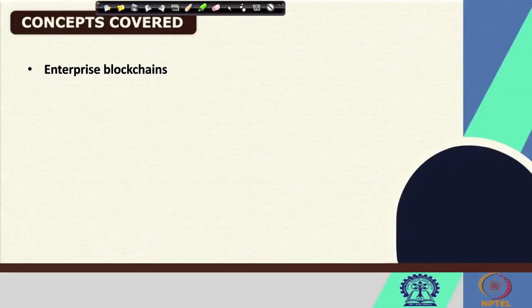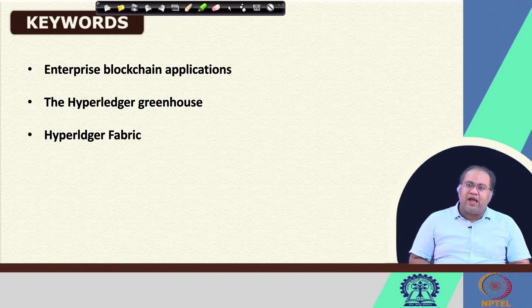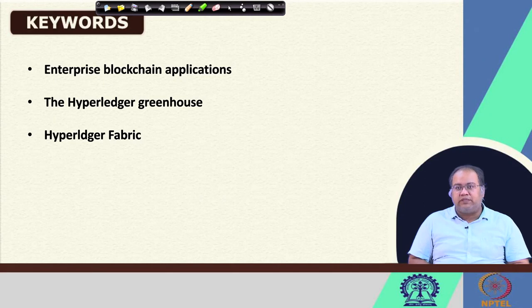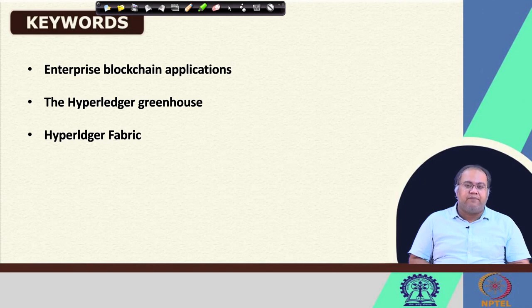The broad concept we are going to cover today is the idea of enterprise blockchain and how blockchain is suitable for different enterprise applications. The keywords for today's talk include applications in the enterprise blockchain domain, followed by the different projects under the Hyperledger Greenhouse, and finally Hyperledger Fabric. In the next lecture onwards, we will get a tutorial on how to develop an application using Hyperledger Fabric.